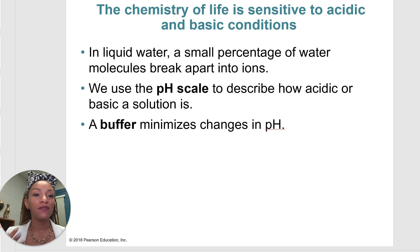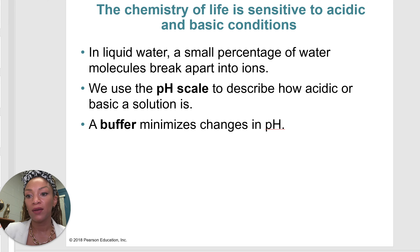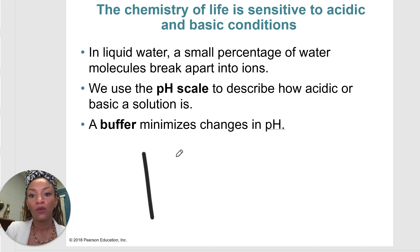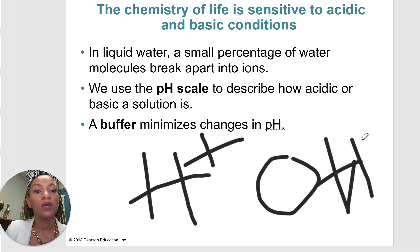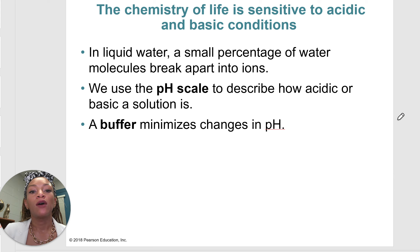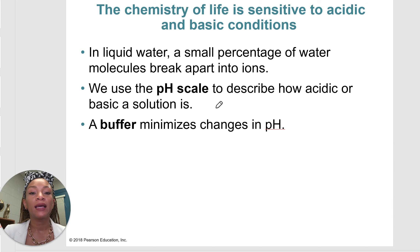The chemistry of life is also very sensitive to acidic and basic conditions. In liquid water, a small percentage of water molecules break apart into ions — either protons or hydrogen ions, which are positively charged, or hydroxide ions, which are negatively charged. We use the pH scale to describe how acidic or basic a solution is. A buffer minimizes changes in pH. A neutral pH is 7. Below 7 is more acidic, and above 7 — all the way up to 14 — is more basic.